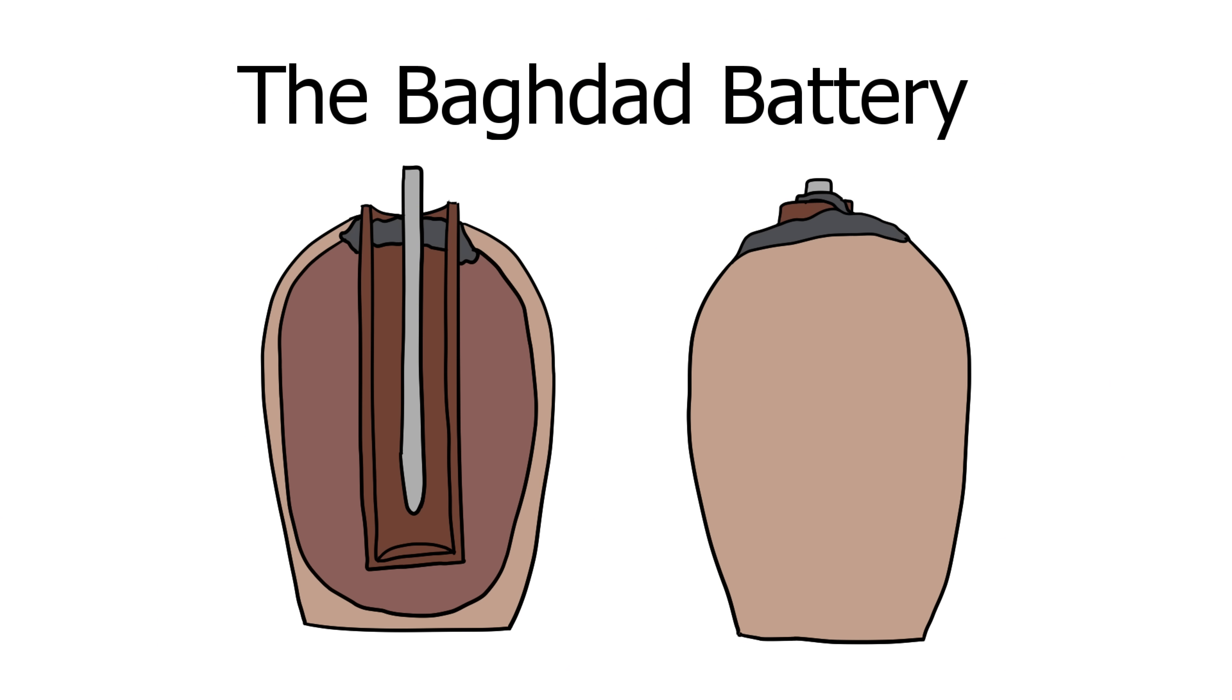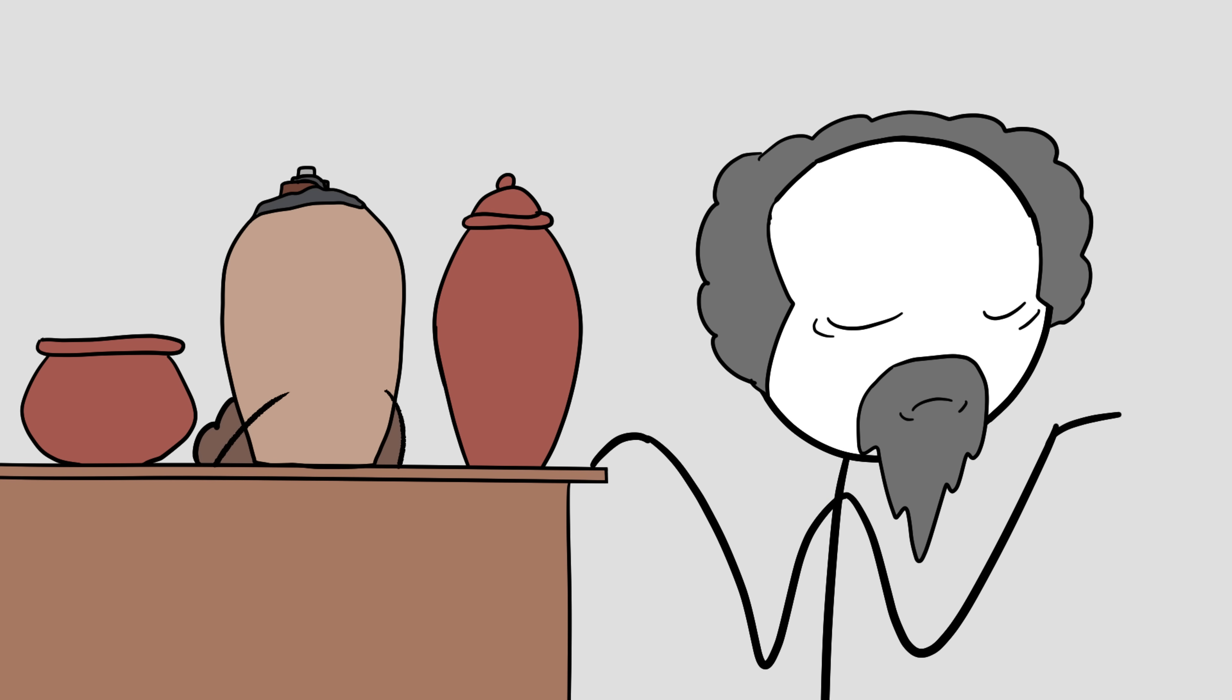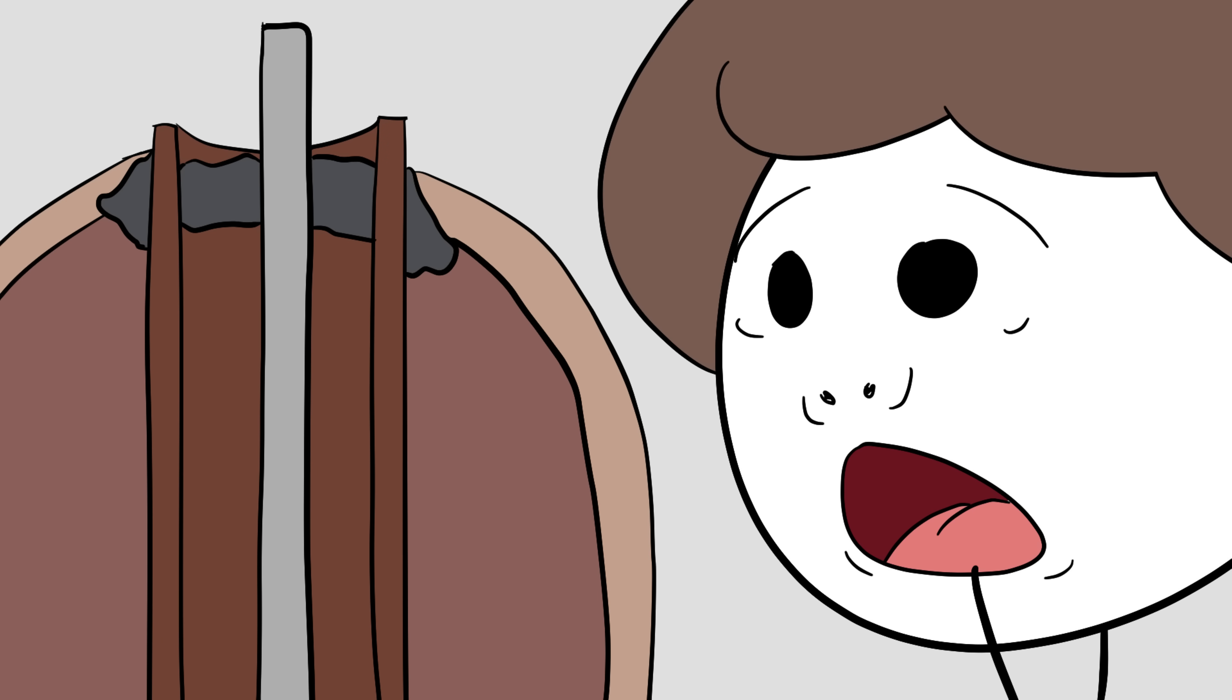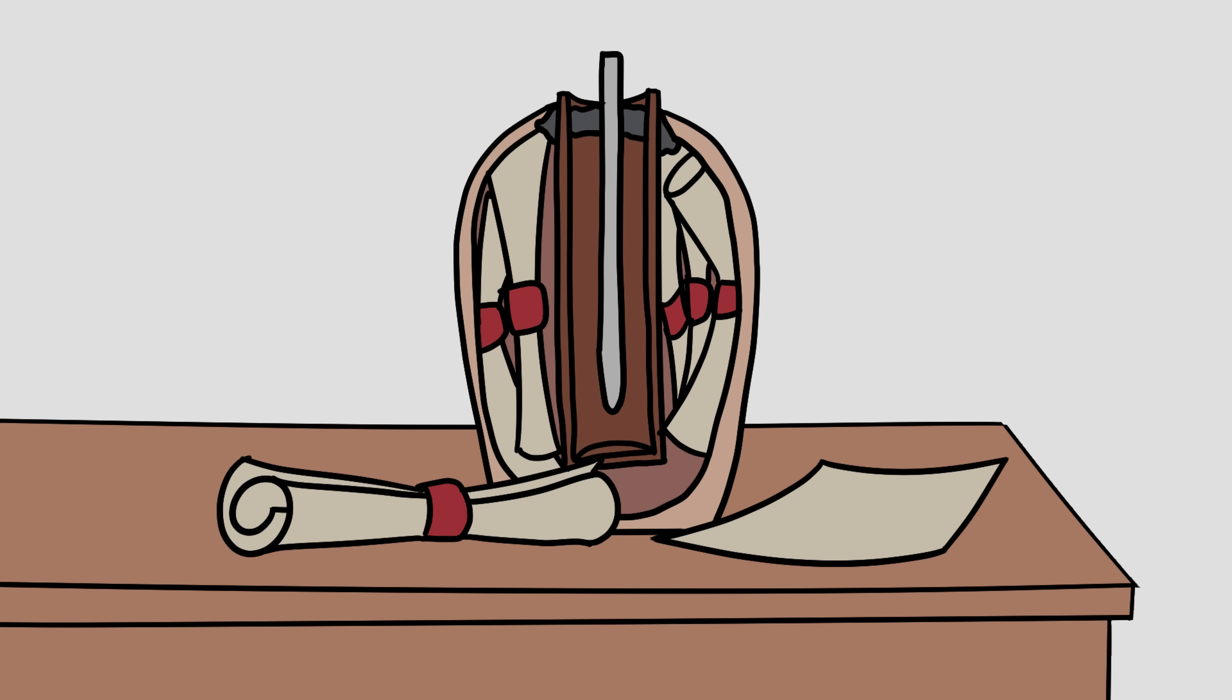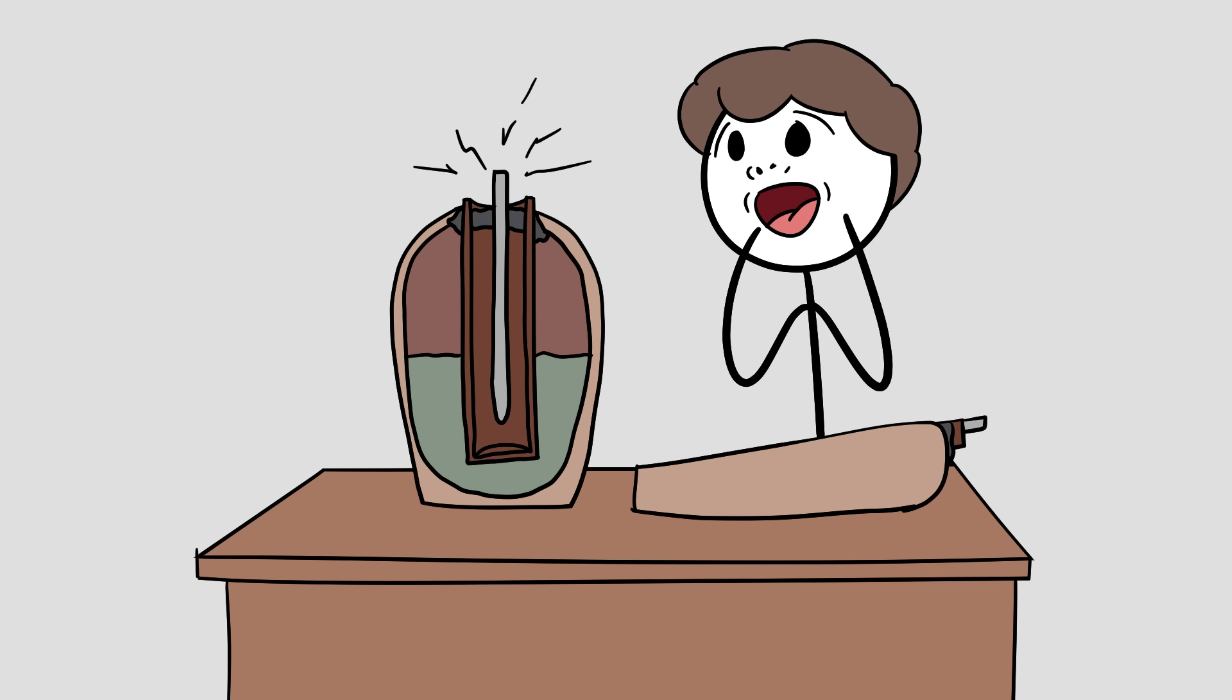Number nine, the Baghdad Battery. In the 1930s, archaeologists near Baghdad uncovered a small clay jar with a copper cylinder and an iron rod inside. At first glance, it looked like a simple storage vessel. But when scientists reconstructed it, they realized it could have worked like a primitive battery, generating a tiny electric charge when filled with an acidic liquid like vinegar or lemon juice.